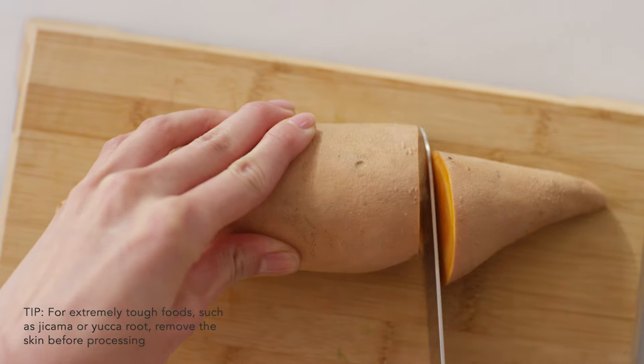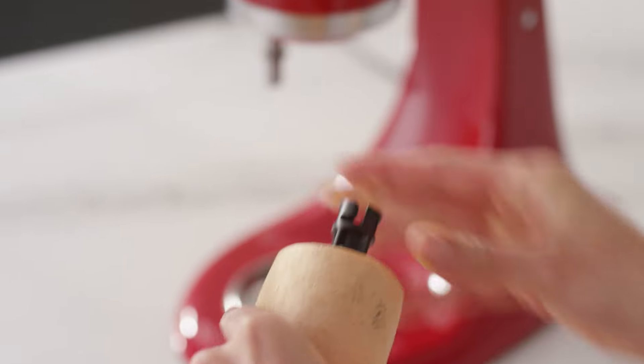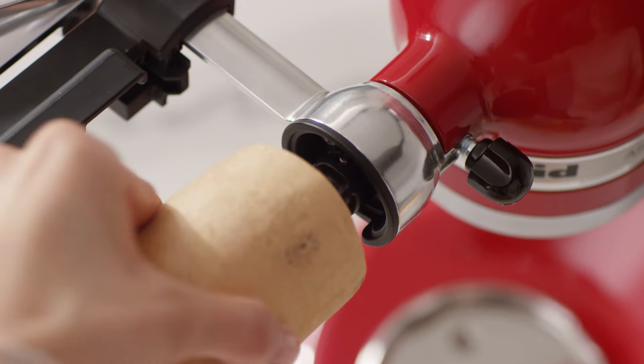Trim the ends of your food to fit within the attachment and insert the food holder into the center of one end. Secure the food by twisting clockwise.